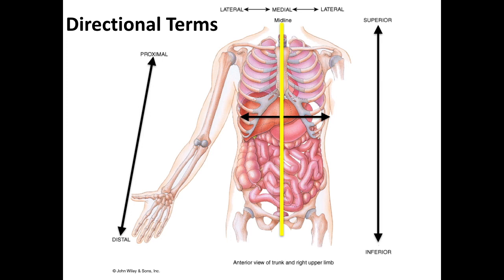So proximal, distal, superior, inferior, medial, lateral — those are the three very common pairs. You're going to often combine these terms to describe the relative position of an organ, such as the stomach, which is inferior and lateral to the heart, or the thumb, which is lateral and proximal to the pinky.